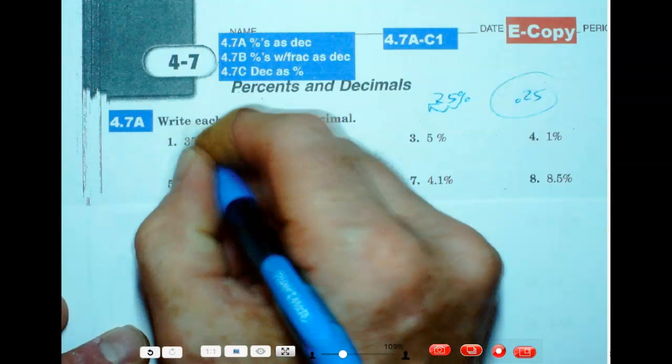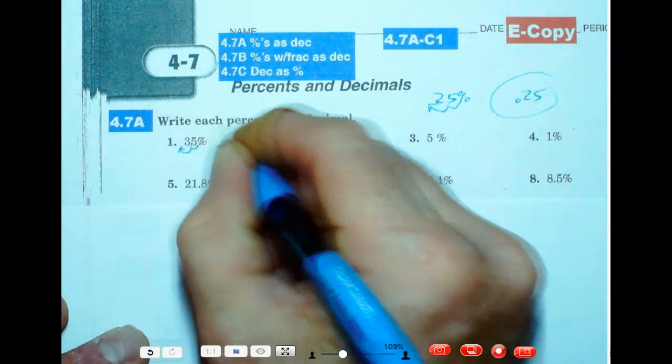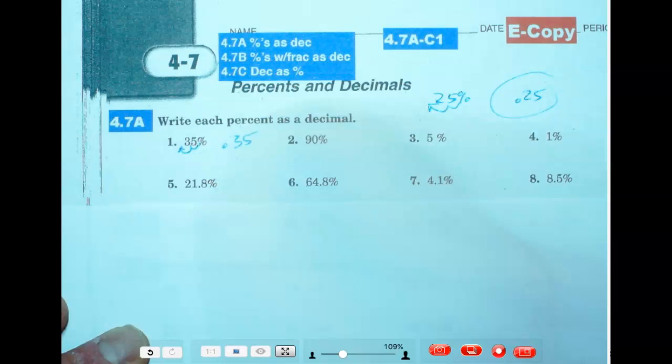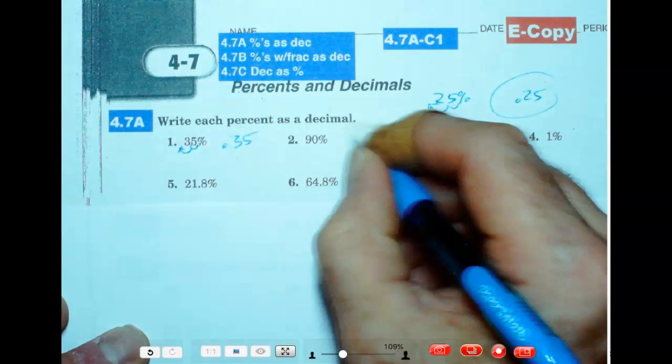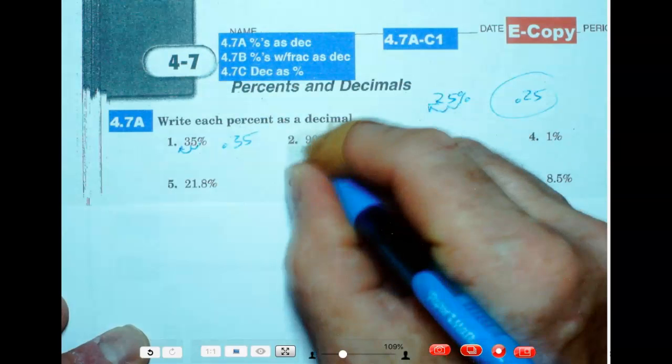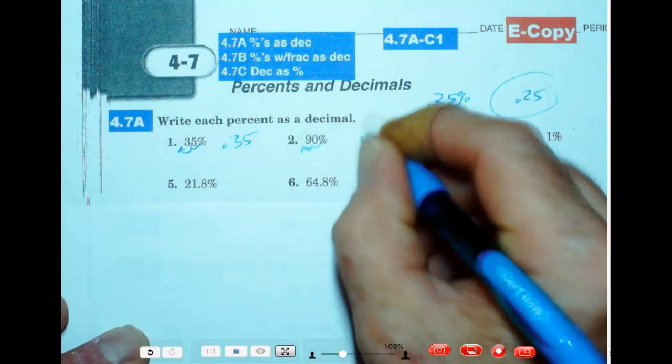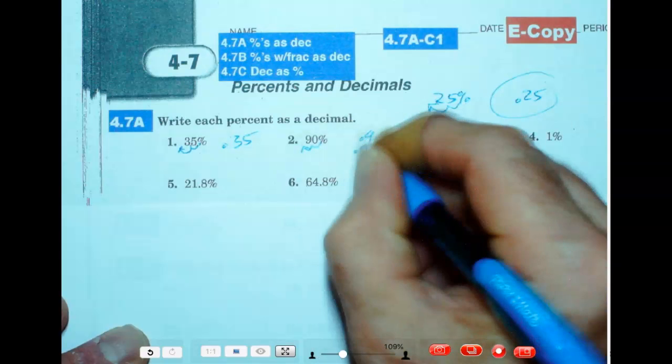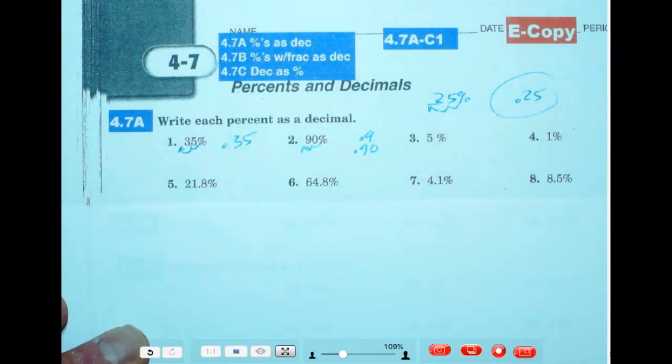So we're going to move this one two places. We're going to get that to 0.35. 90 percent. Divide by 100. We've got 0.9. Or if you want to write it as 0.90, if that makes you feel warm and fuzzy inside, that's fine too. I mean, that zero is not necessary, but if it helps get it right, good.